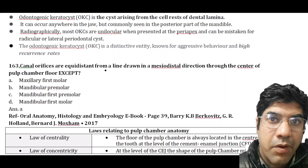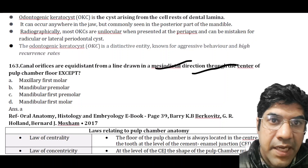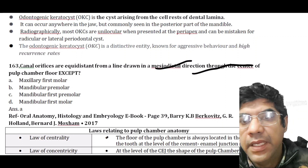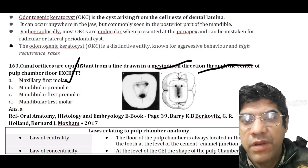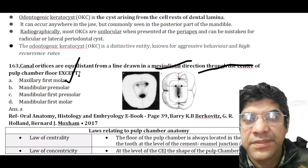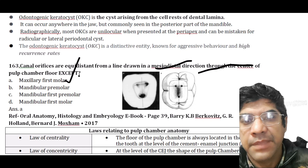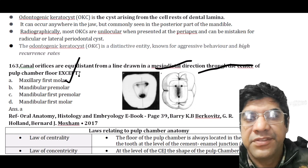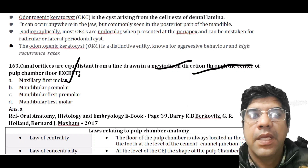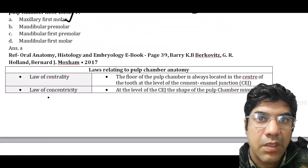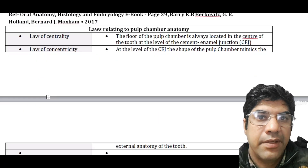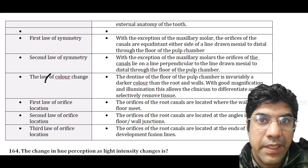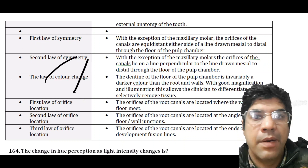The canal orifices are equidistant from a line drawn in the mesio-distal direction through the center of the pulp chamber floor — except in the maxillary first molar, according to the law of symmetry. This law indicates that for most teeth, canal orifices are symmetrically positioned around the centerline through the pulp chamber floor. Other related laws include the law of centrality, concentricity, first and second law of symmetry, and the law of color change.